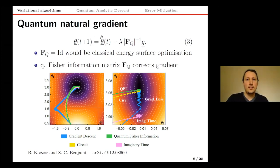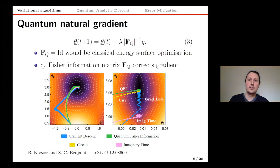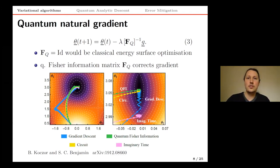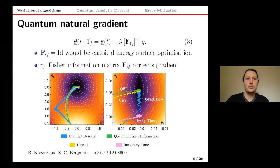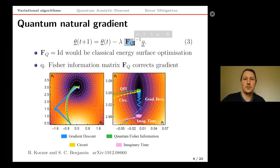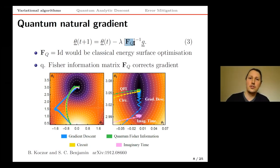In our paper we made the ultimate generalization of this idea, relating the problem to Riemannian optimization. This applies to any quantum circuit — noisy or even non-unitary. We can state that the update rule needs to use the so-called quantum Fisher information matrix, which is a complete analogy to classical machine learning where we use the classical Fisher information.